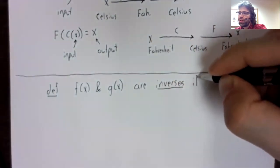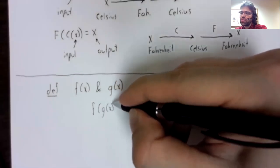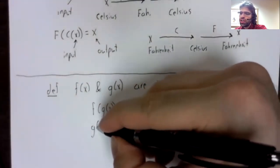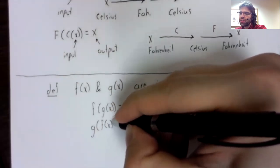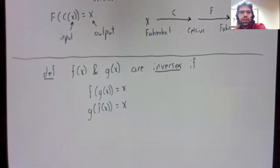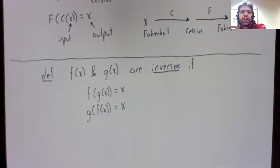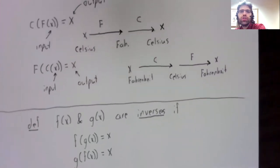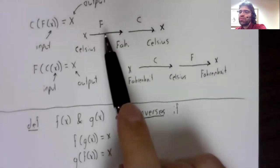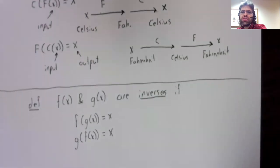This motivates the following definition. Two functions f and g are inverses if f of g of x equals x and g of f of x equals x.